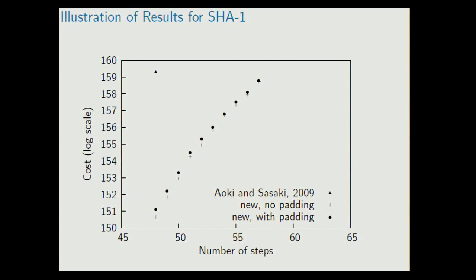To summarize, this is illustration of our results. The pluses here are the one-block pre-images without padding. The bullets are the two-block pre-images with the correct padding, so what we want. And this here, for comparison, this is the Aoki Sasaki result. It was the best result before. And this finishes my talk. Thank you for your attention.